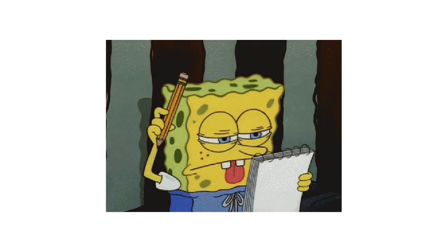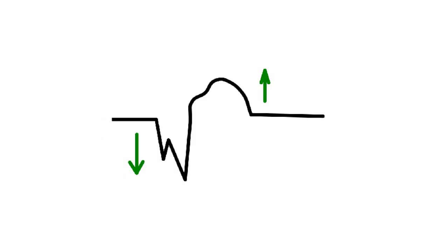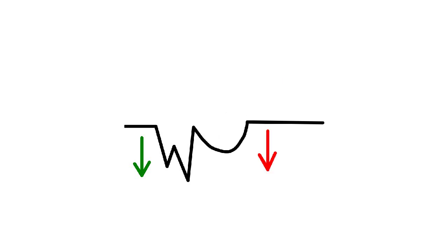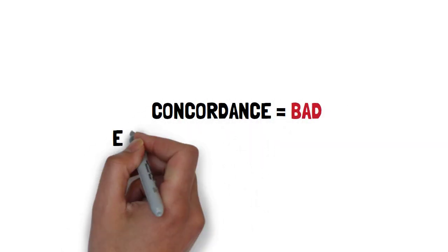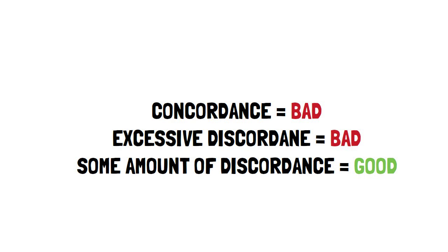This brings us back to the original question: how do you recognize MI in the setting of left bundle branch block? This can be done by using the modified Sgarbossa criteria. Although this may sound difficult, the basic concept is really easy. Looking at lead V1, we can see the W pattern with appropriate discordance in ST and T waves. If we superimpose ST segment elevation, the discordance will increase. If we superimpose ST segment depression, there will be concordance. So: concordance — bad. Excessive discordance — bad. Some amount of discordance — good. That is the Sgarbossa criteria.